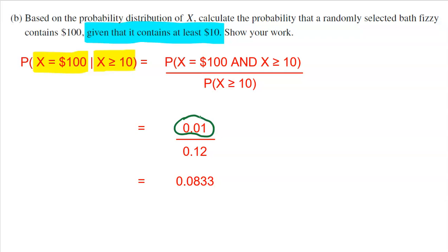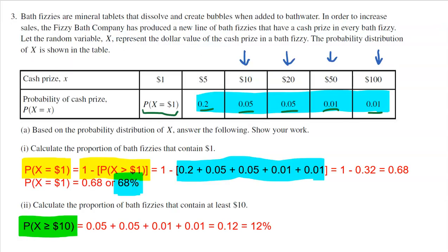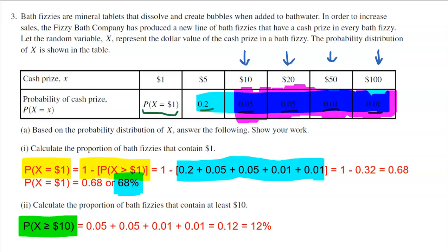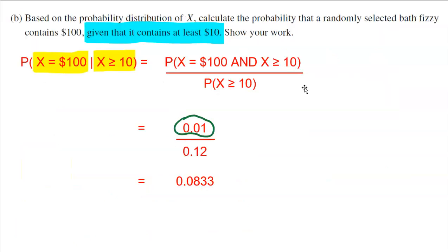So the numerator, both, is the probability that you're greater than or equal to 10 and $100, but that's just the same as the probability that you are $100. That's 0.01. That, I guess you could say, is the overlap, right? So if I go back to my chart here and I say, okay, I'm gonna highlight everything that is greater than or equal to 10, and then the overlap that's also $100 would be right here. That is the overlap.